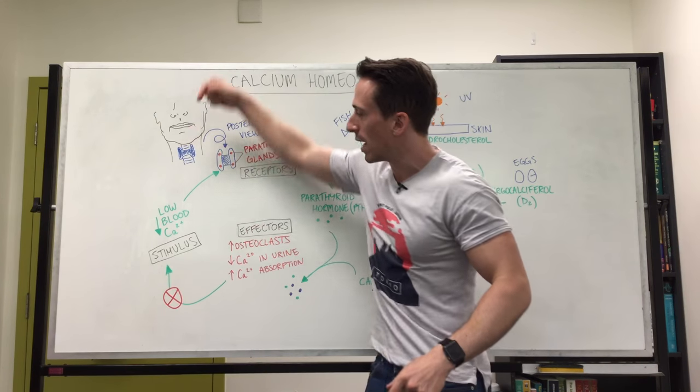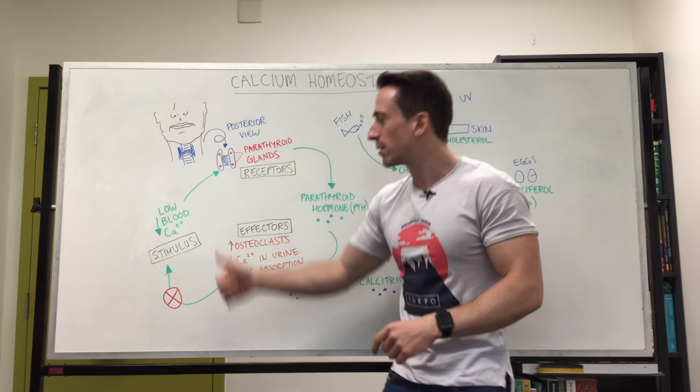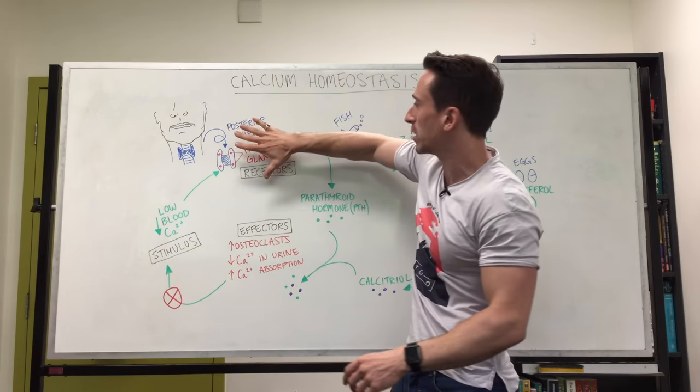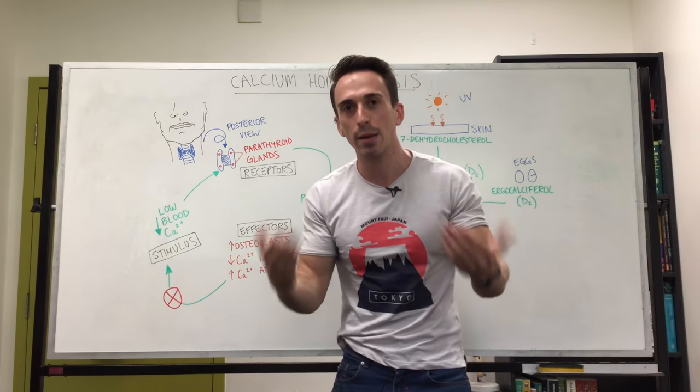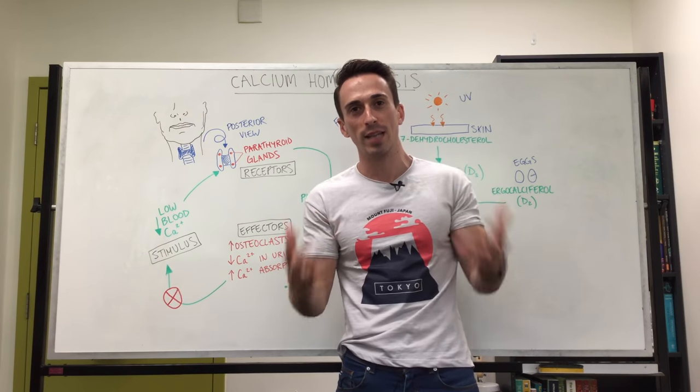So the stimulus was a decrease in blood calcium and the effect was an increase in blood calcium that negates the stimulus stopping the release of parathyroid hormone and then this whole homeostatic chain is inhibited. This is called negative feedback and this is calcium homeostasis.